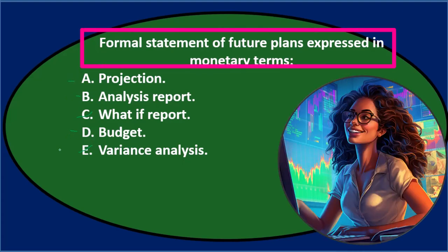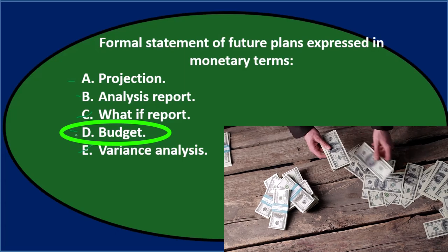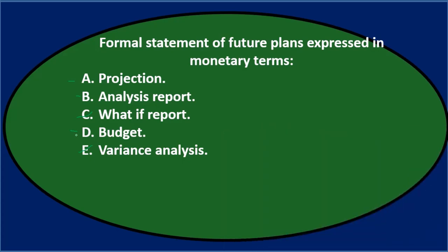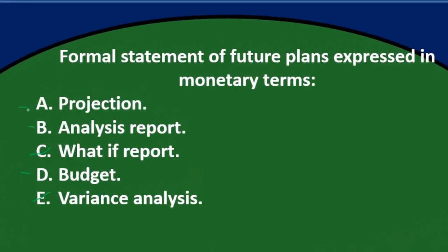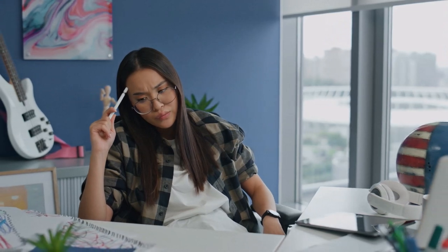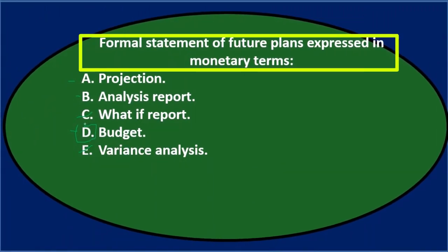So the question — 'formal statement of future plans expressed in monetary terms' — comes down to A (projection), B (analysis report), or D (budget). Since we're focused on the budgeting area, the answer is D. Note that 'projection' might sound correct, but it's not the best answer. You probably won't win that argument if you contest it. Final answer: D — budget.